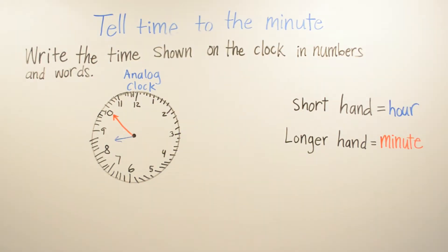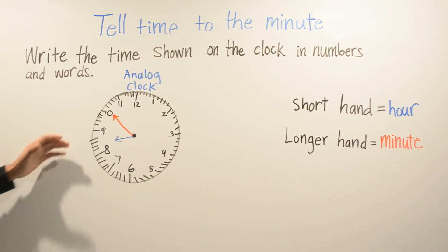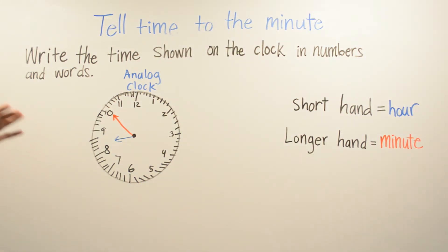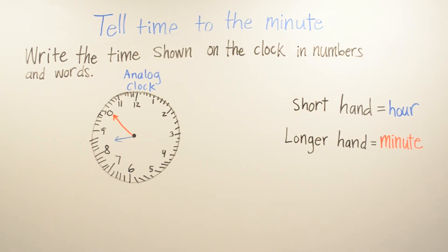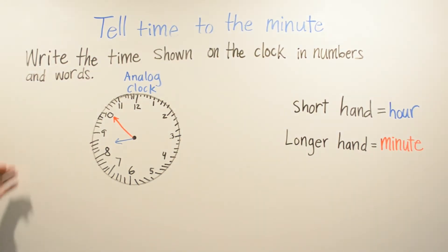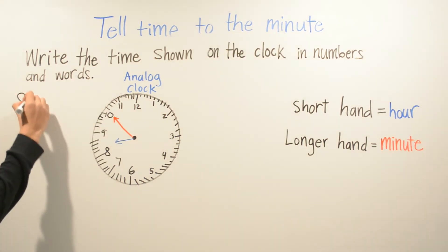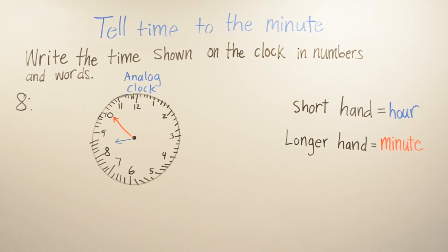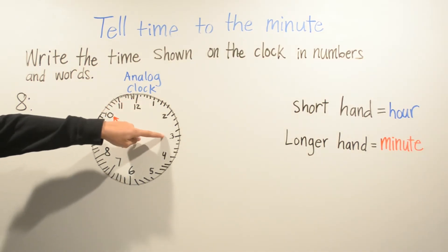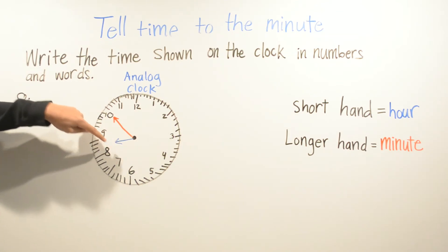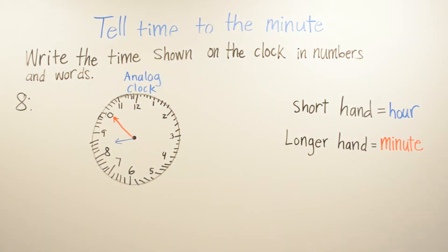For this problem, we have to write the time shown on the clock in numbers and words. Remember that the short hand is the hour and the longer hand is the minutes. The hour has passed 8 but hasn't reached 9, so it's still 8. Let's write it first in numbers — our hour is 8. Now let's count the minutes by 5: 5, 10, 15, 20, 25, 30, 35, 40, 45, 50. So your minute is 50.